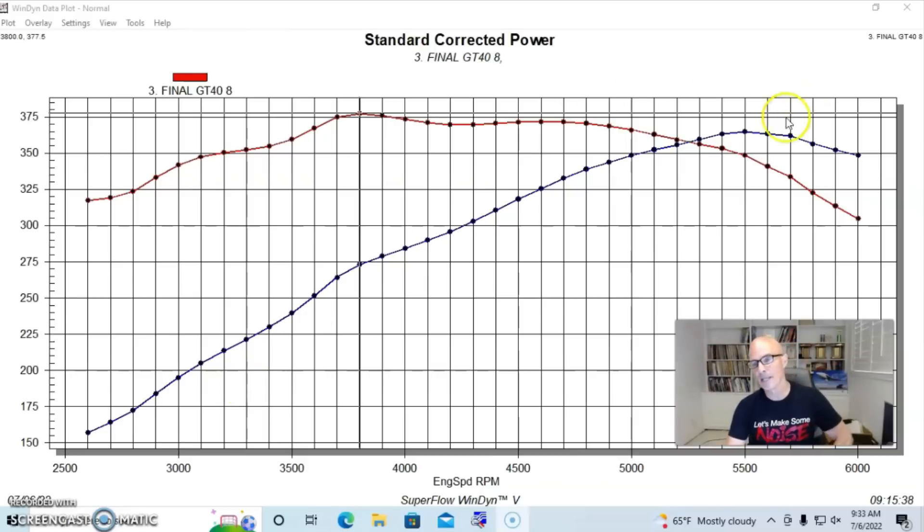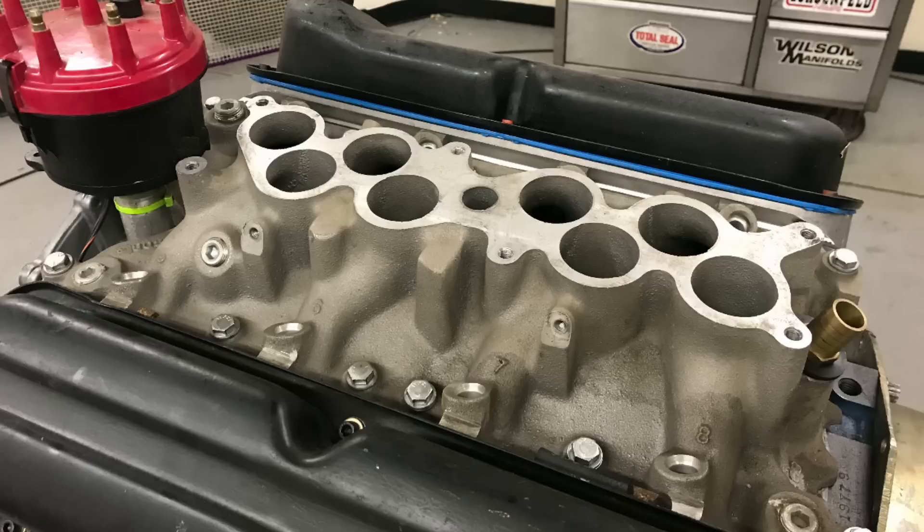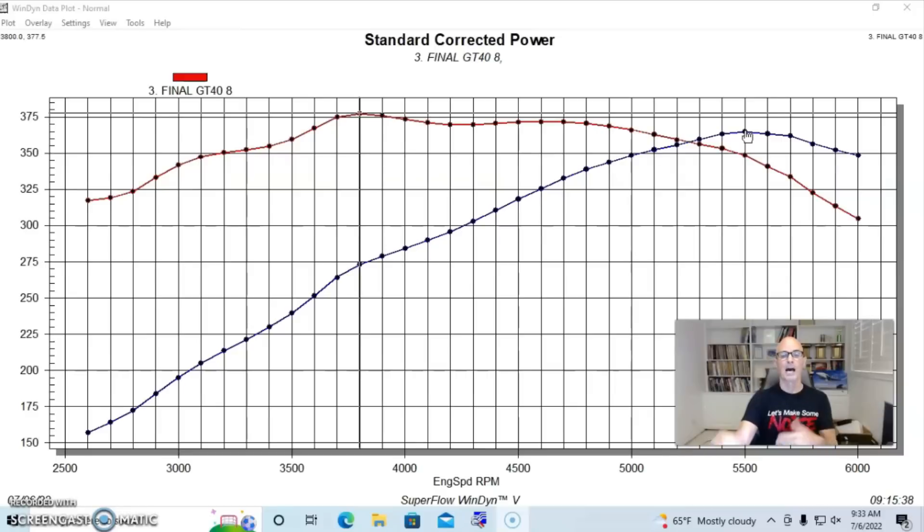So our combination run with the GT40 upper intake manifold, and all of the combinations were run with the same GT40 lower manifold. All we did was upgrade the tops on all of these. So run with the tubular intake manifold,